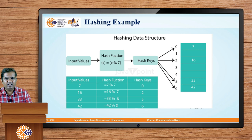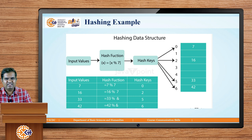Here we have different input values and a hash table of size 7. The indices start from 0 and go up to 6 — so there are 7 indices total. Since the size of the hash table is 7, we are performing x mod 7 as the hash function, where x is the input value we want to store. This hash function gives us the hash keys, which are the indices, and the table below shows the examples.